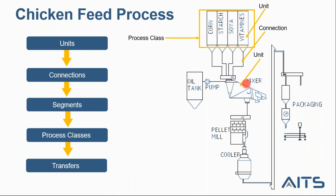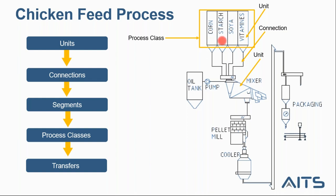We will start by defining and configuring our units. A unit is a group of processing equipment that can either process the material or hold the material. Units processing the material include the mixer, the pellet mill, and the oil tank. Units holding the material are the storage tanks in which we hold raw materials like corn, starch, soya, and vitamins.